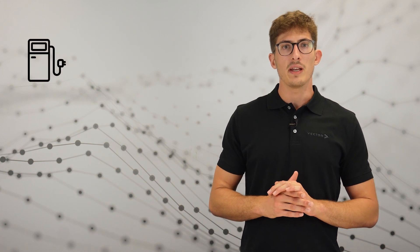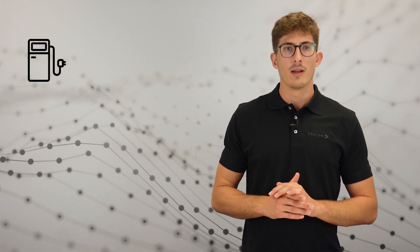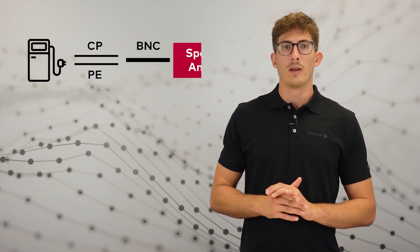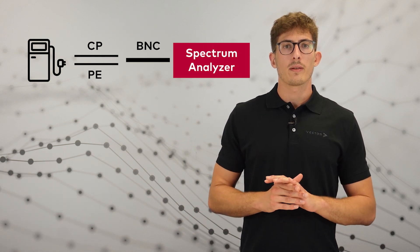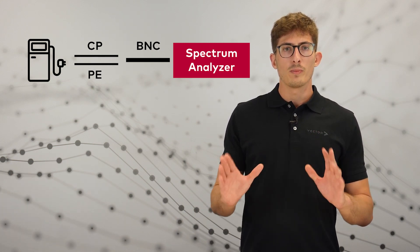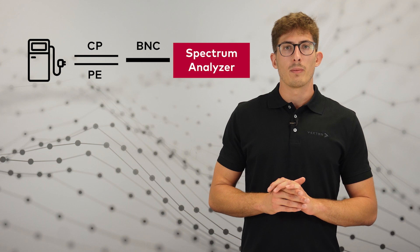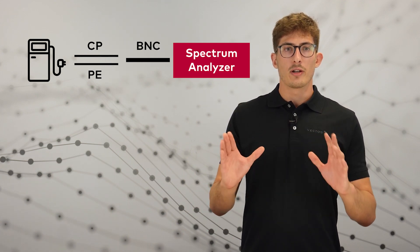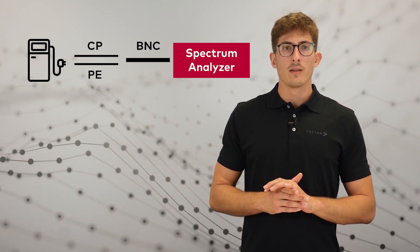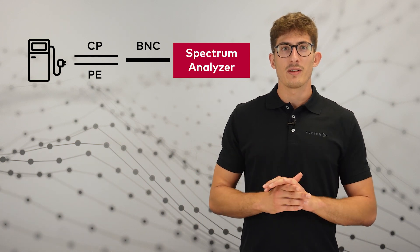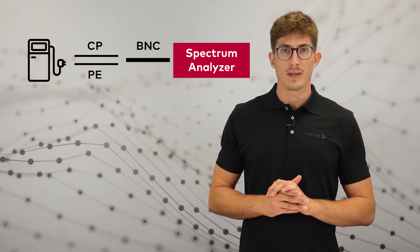The second option is listening on beacon frames of an EVC node. The EVC node will periodically send beacon frames. When listening on the beacon frames, set the spectrum analyzer to max hold. A full spectrum of the transmitting power will show after a couple of minutes. The disadvantage of this method is that due to longer recording times, background noises and interferences will slightly distort the measurement.